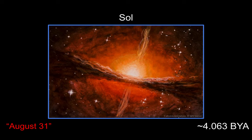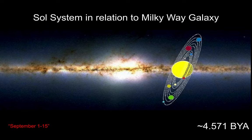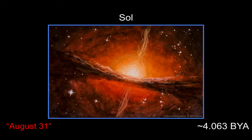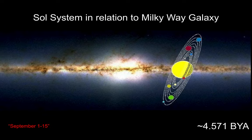About 4.063 billion years ago — August 31st — the solar system was born. The enriched guts of huge, supermassive stars exploded. Their pieces, their matter and energy, came together through gravity to form our sun. It took another 15 days for the solar system to configure itself into something even resembling what we have today. From 4.063 billion years ago, it took about half a billion years to even come into its current state.